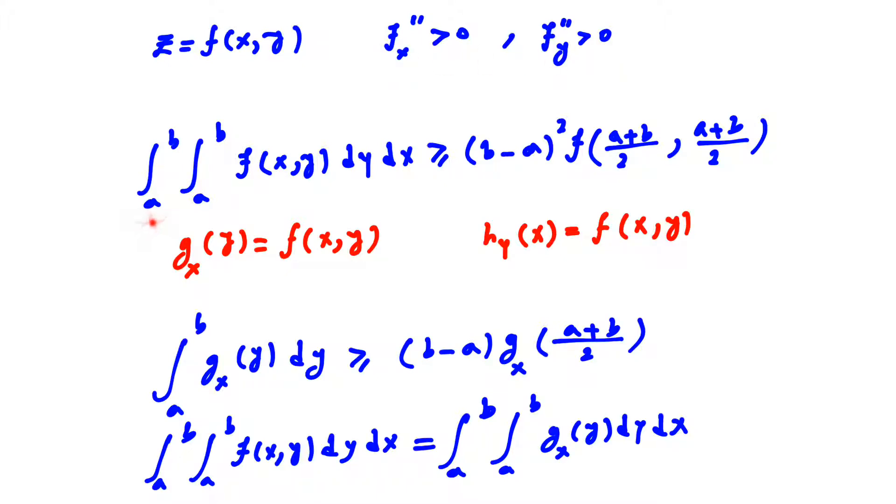then the double integral from a to b, integral from a to b of f(x,y) dy dx is greater than or equal to (b-a)² times the value of the function when x and y both equal (a+b)/2.